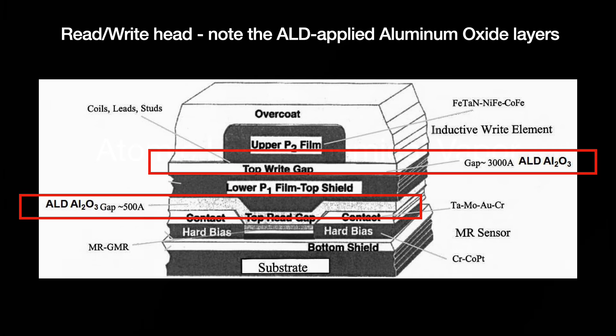Considering the lack of interest in epitaxy, a name change was in order. The original first option, Atomic Layer Chemical Vapor Deposition, or ALCVD, didn't work out because of a copyright. Thus, they decided to go with Atomic Layer Deposition — and that has worked out very well.